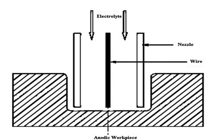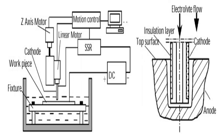This is the setup where electrolyte flows. This is the wire center, this is the nozzle, and electrolyte flows between the gap. This is the cathode, workpiece, and fixture. The motor control is shown, then the electrolyte flow with cathode and top surface, and material can be removed from the hole.